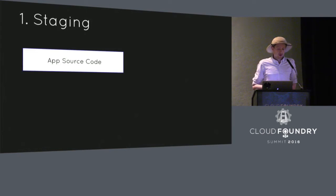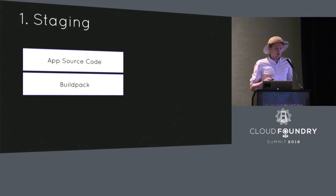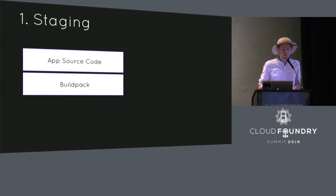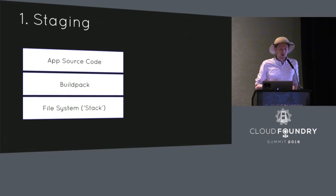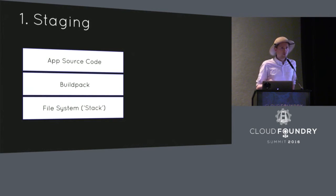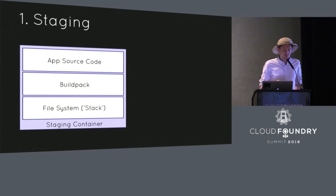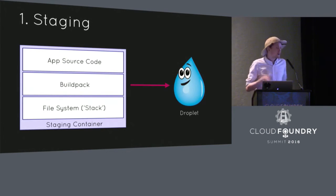Staging looks like this: we take our application source code, combine it with a buildpack that provides the runtime dependencies, and compile that together into an artifact. To do this, we need somewhere to run the compile step — a root file system or operating system. In Cloud Foundry terminology, this root file system is known as a stack. Every deployment of Cloud Foundry comes with a default stack, typically Ubuntu. We create a container using that stack as the root file system, run the compile step, and output a droplet — the immutable artifact that can be scheduled to run on our Cloud Foundry platform.